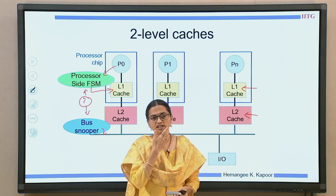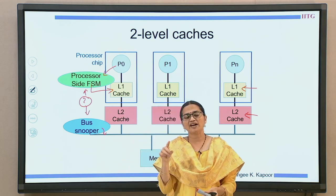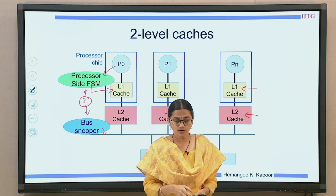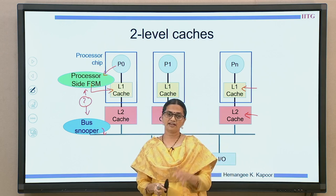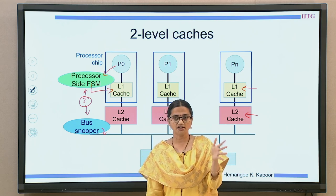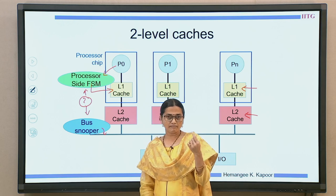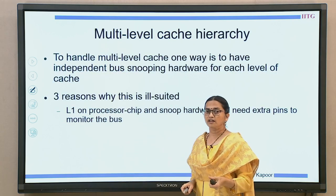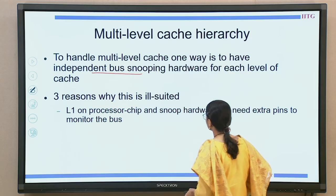One solution is to make the bus snooper also snoop L1. When you attach a snooper to L1, it will need to do tag comparison, so you will have to duplicate the tags at the L1 level. Since L1 is closest to the processor, you do not want to stall the processor — hence duplicating the tags is required. Also, if you have a snooper attached to L1, the snooper will need extra pins to the IC to connect to the bus, which adds to the real estate of the IC.